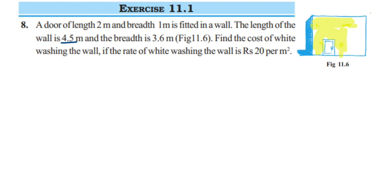Since we're not going to paint the door, we only need the area of the white portion. From the entire rectangle of the wall, if we subtract the area of the door — shown in red — we get the area of the wall where whitewashing will be done. So we'll find the area of the wall, find the area of the door, and subtract to get the area to be painted.